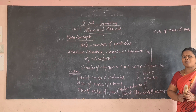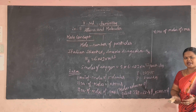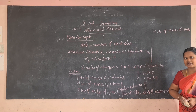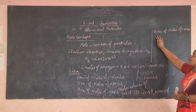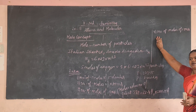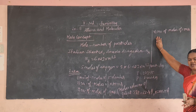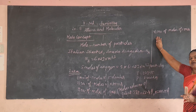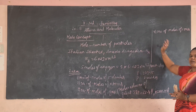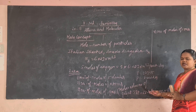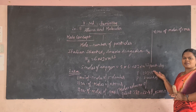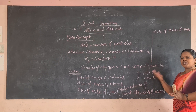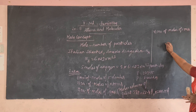The number of moles of atoms refers to the aggregate number of particles present in the gram atomic mass. For example, one mole of oxygen atoms means 6.023 × 10²³ particles in 16 grams — that is the gram atomic mass. The gram molecular mass of oxygen molecule (O₂) is 32 grams, corresponding to 6.023 × 10²³ molecules.